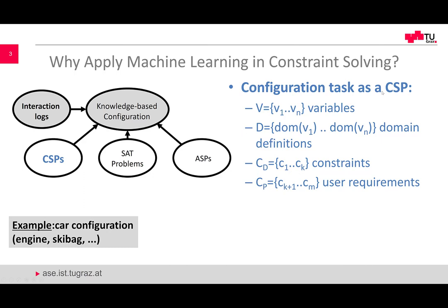A configuration task can be represented as a CSP. We have variables, domain definitions, and constraints describing the product. We also have constraints describing user requirements. In a more elaborated setting we talk about preferences, but for simplicity I will omit this aspect here. A configuration problem can be, for example, a car configuration problem — a user interacts with a configurator and tries to configure a car, selecting an engine type and further features he or she wants to include or not include.